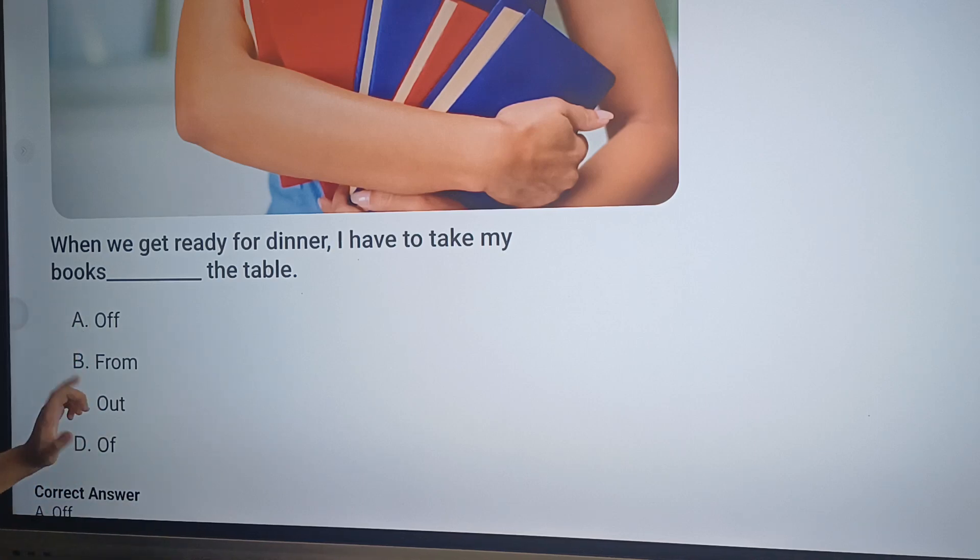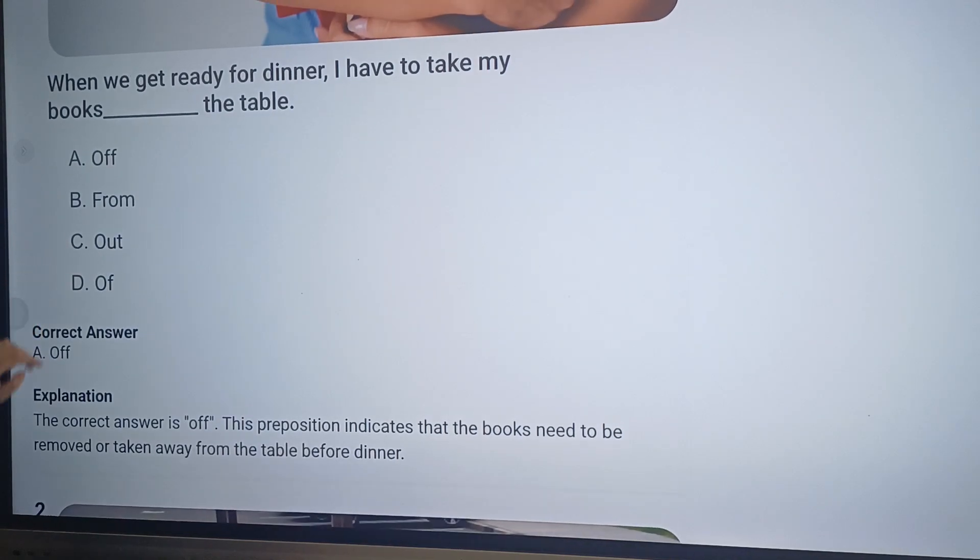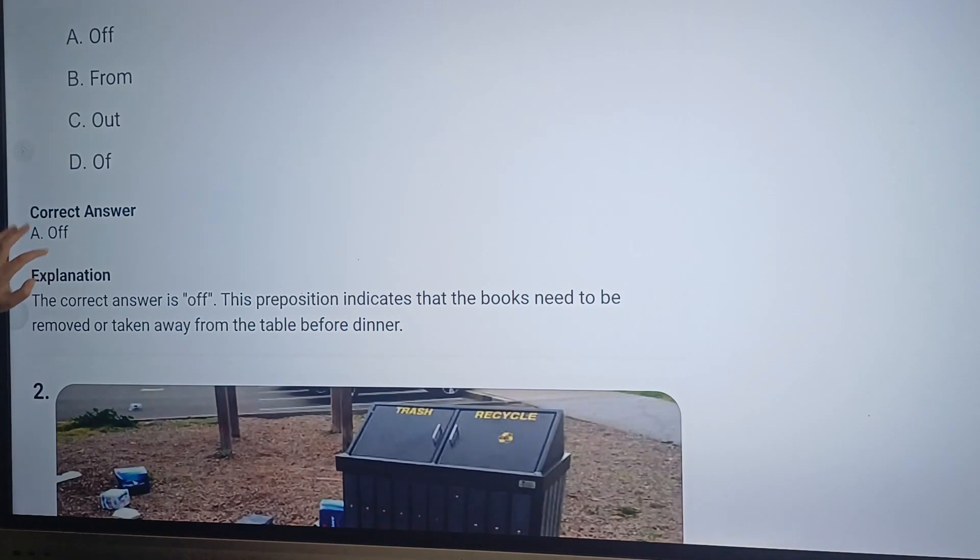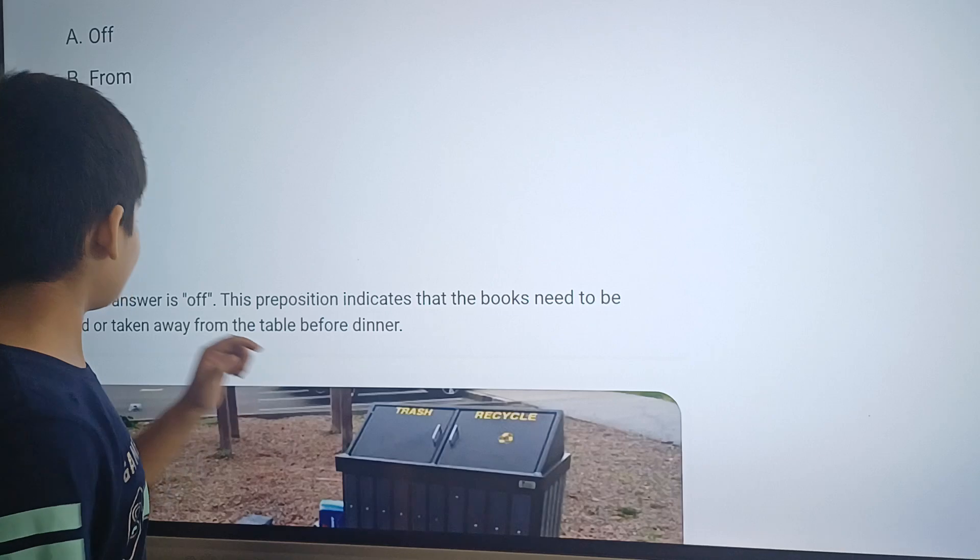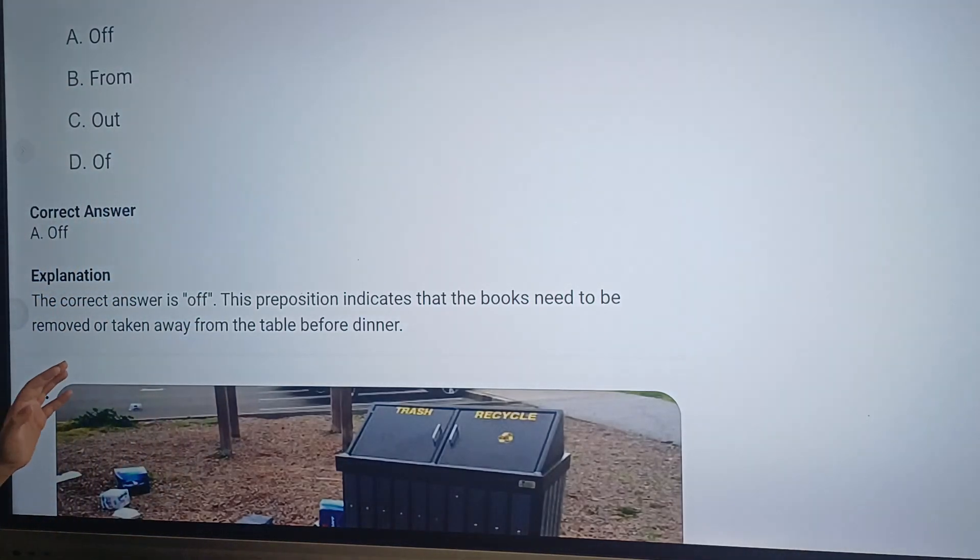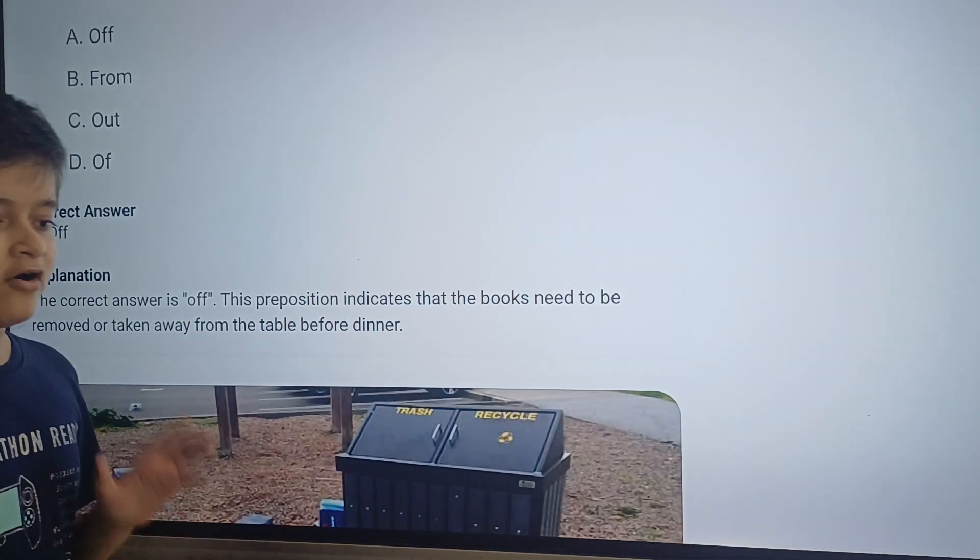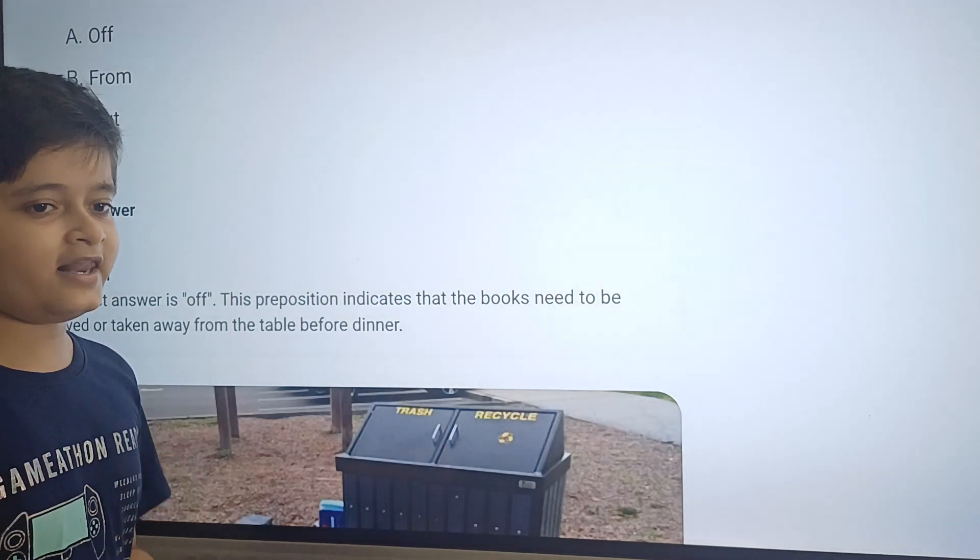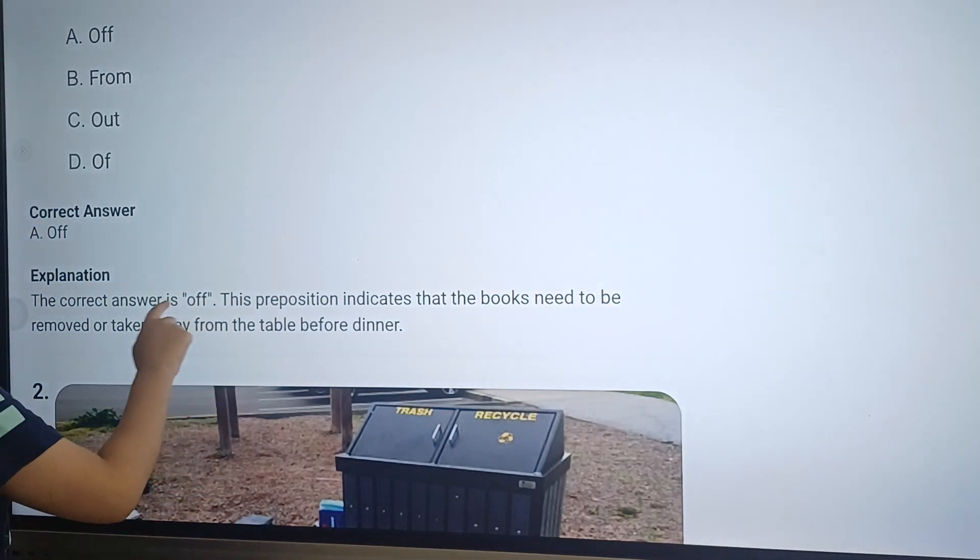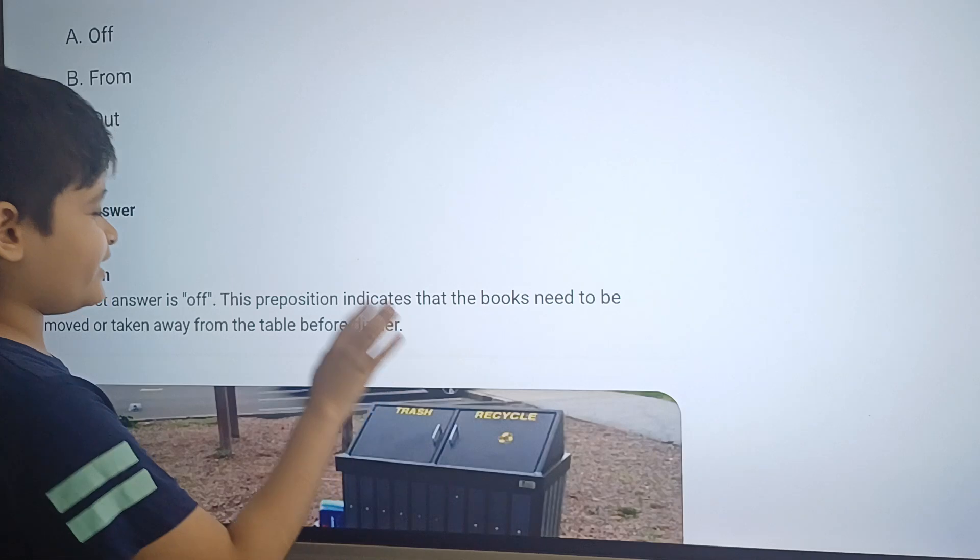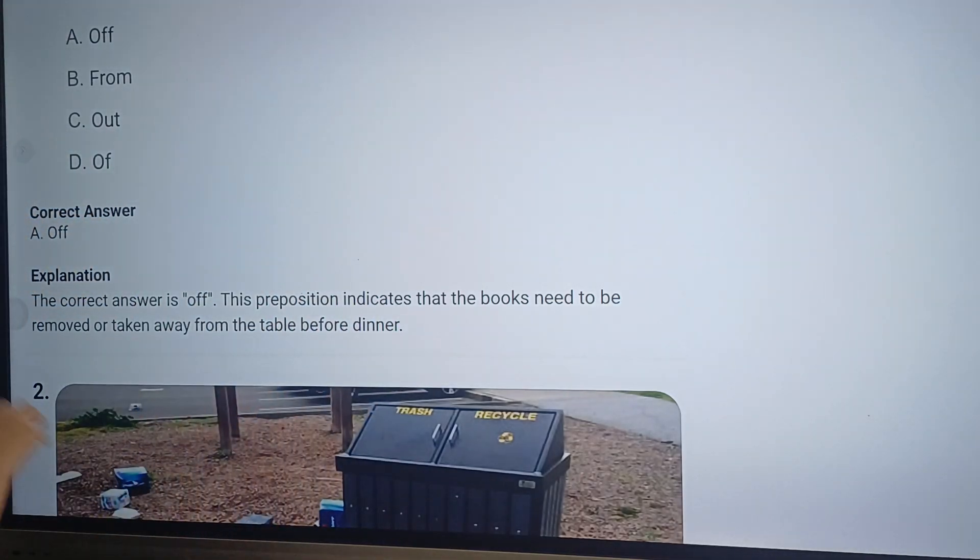Alright, now that is taken care of. Let's go ahead and see the answer. The correct answer is off. The explanation for this answer is this: The correct answer is off. This preposition indicates that the books need to be removed or taken away from the table before dinner. Remember, off with two f's has a different meaning than of with just one single f, and the meaning for this type of off is that it indicates that something must be removed or taken away from something else.